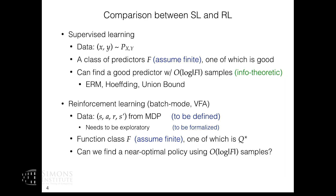It turns out the key assumption here is what we call realizability — we have a function class that captures the target function we want to approximate. The key question is: are these assumptions sufficient?